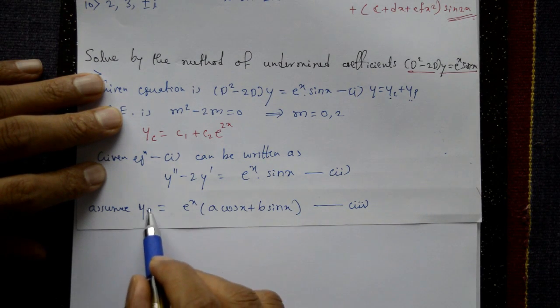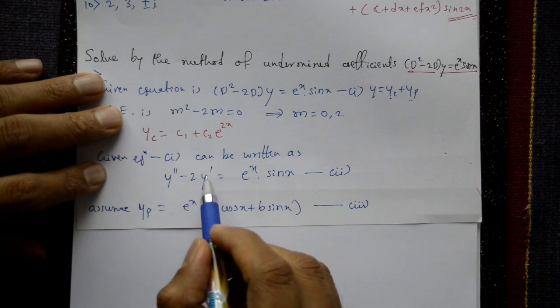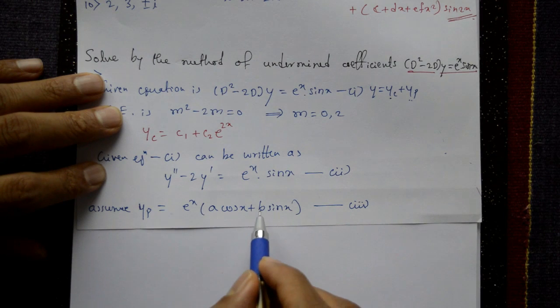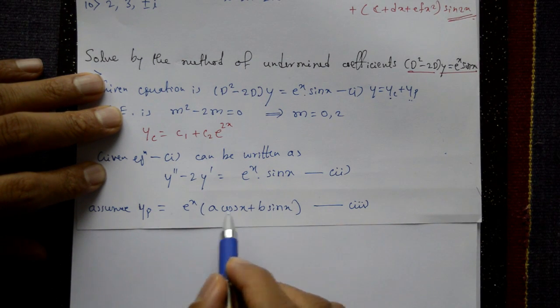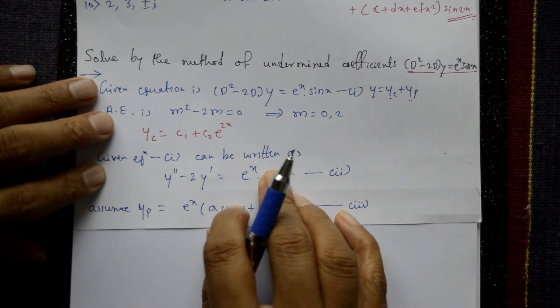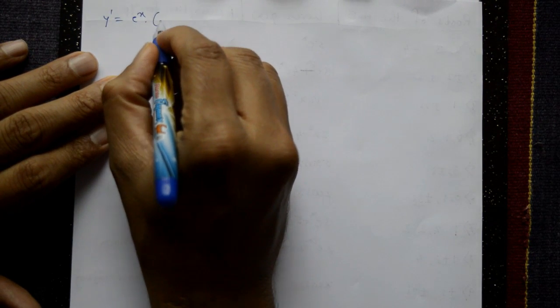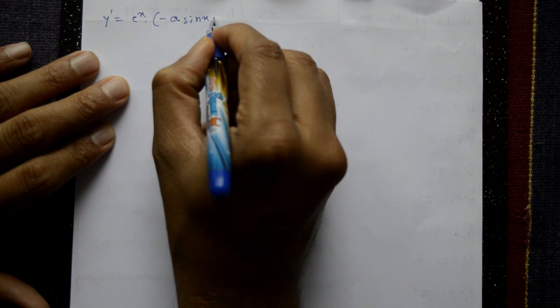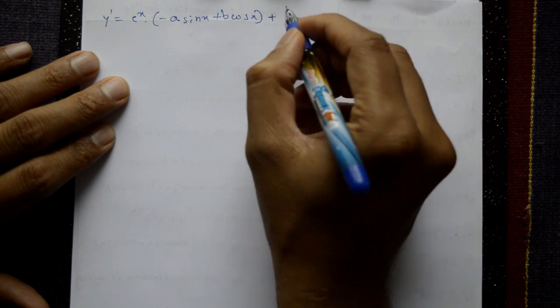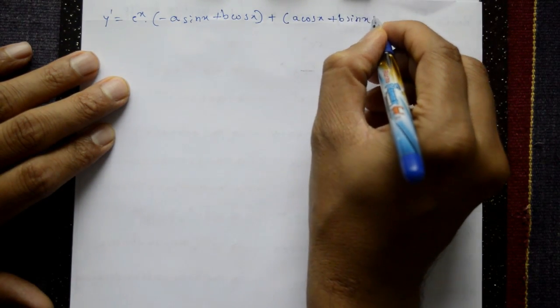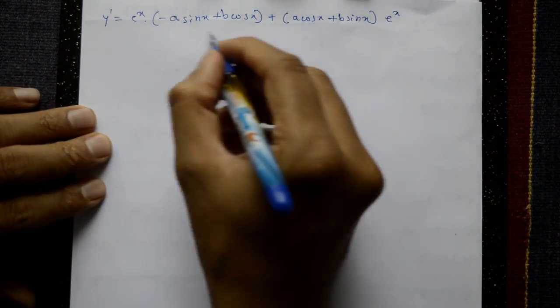We need y' and y'' — differentiate the assumed yp two times, then substitute to find a and b. Differentiating equation number three using the product rule: y' = eˣ(−a sin x + b cos x) + eˣ(a cos x + b sin x).